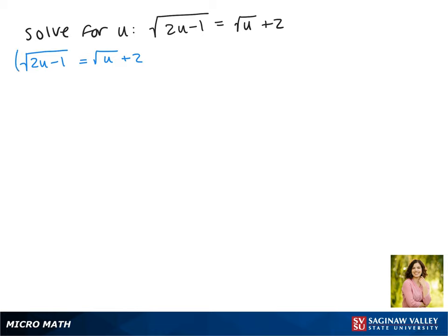Since it's impossible to get a square root by itself, we have to square both sides here. On the left it cancels and we get 2u minus 1, and on the right we have the square root of u plus 2 times itself.